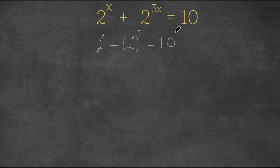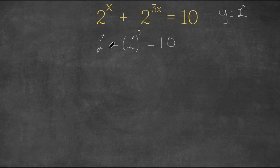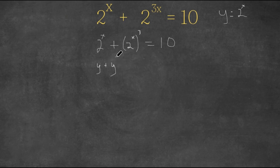Remember, when we have something like this, this is equal to x times 3 — we multiply the exponents — so we're simply reversing that. Now, since we have 2 to the power of x's, we're going to set 2 to the power of x equal to the variable y. So y equals 2 to the power of x. We're going to replace all the terms that have 2 to the power of x with y, so this rewrites to y plus y to the power of 3 equals 10.